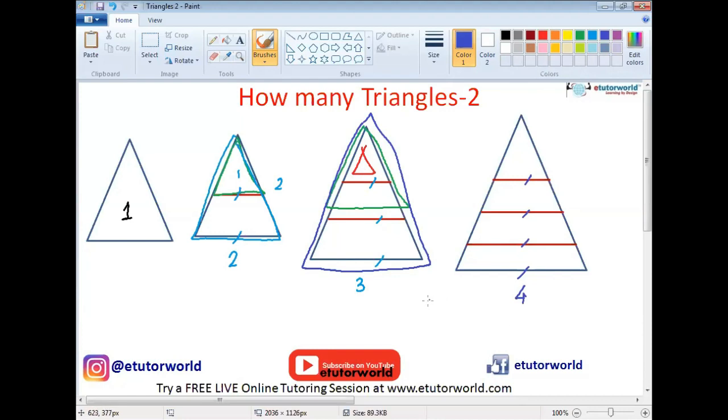This will be very helpful when we are doing questions which are complex in nature, where the number of lines will be more. But just be careful, this is only valid when the triangle is cut by horizontal lines. So therefore, we can say that the number of triangles formed is equal to the number of horizontal lines.